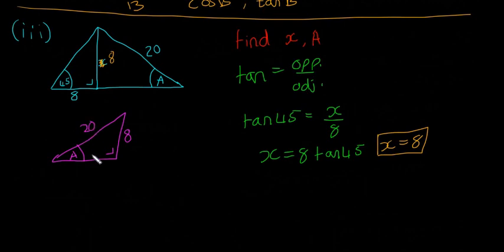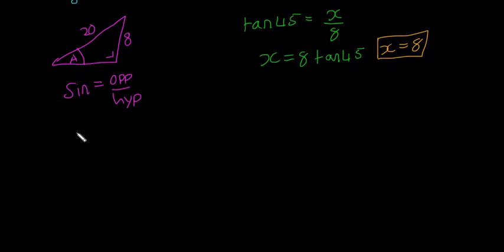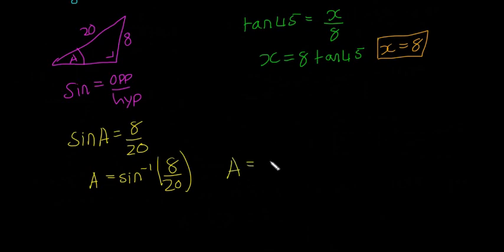We have opposite and we have hypotenuse, so we're going to have to use sine. Sine is equal to opposite over hypotenuse. So sine of A is equal to 8 over 20. We're going to find what A is, so we're going to use inverse sine, which is on the calculator. Inverse sine multiplied by 8 over 20. That means our angle A is going to be about 24 degrees. It's going to be a few decimal places. I just rounded it up a good few.